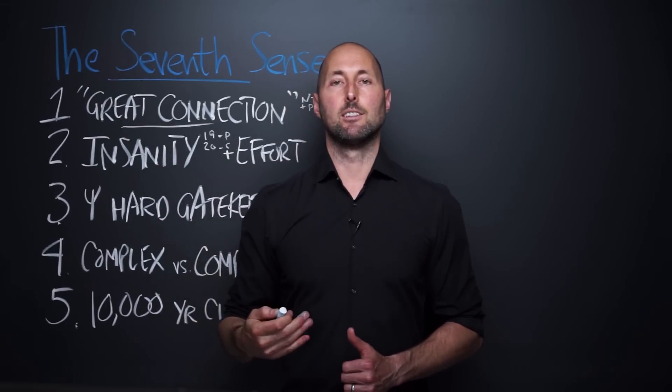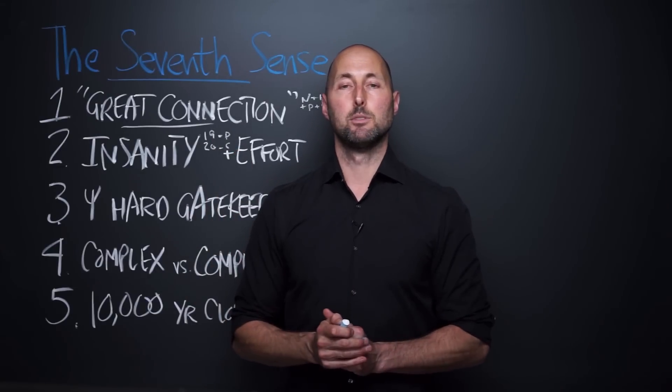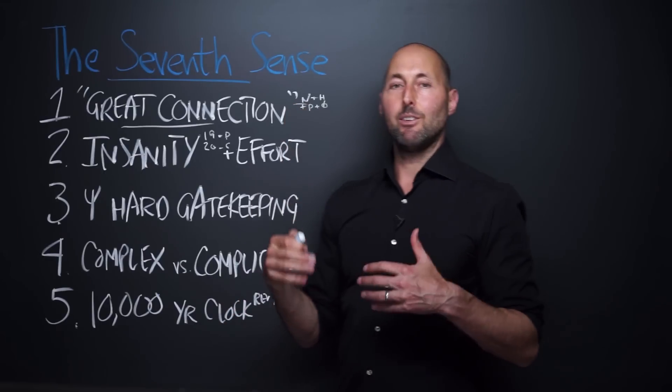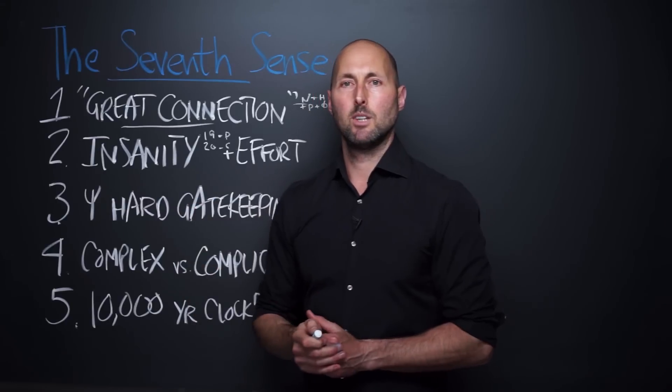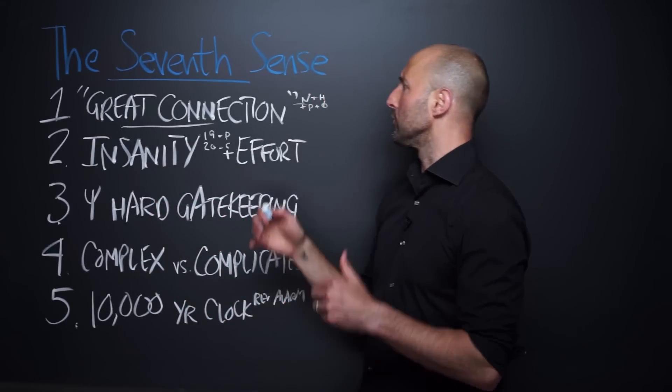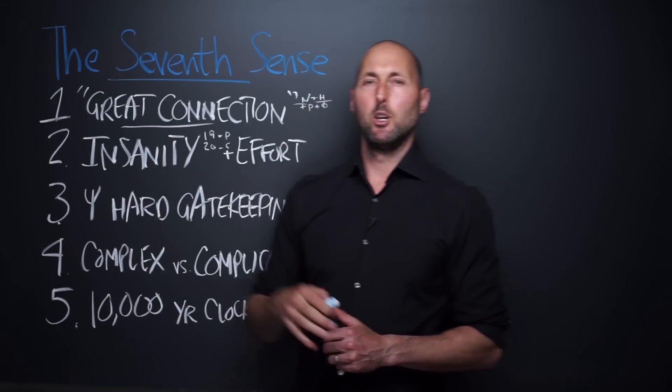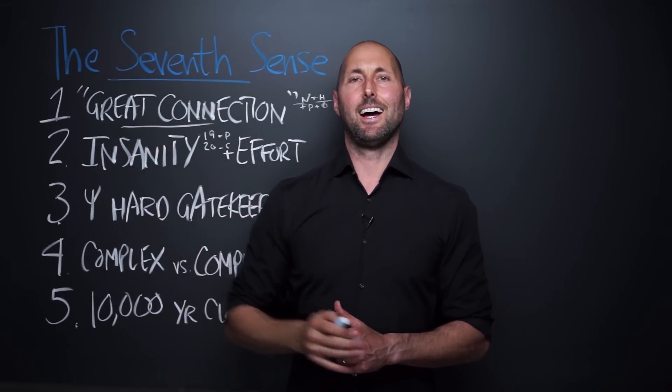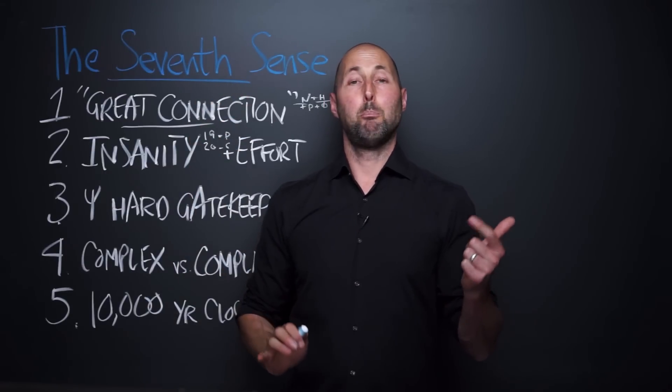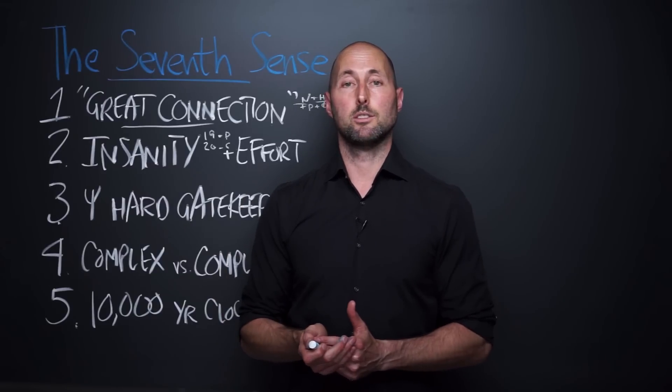Let's start with The Great Connection. The point of the book is that we're living in revolutionary times. He says that this is as revolutionary as the agrarian revolution, the industrial revolution, the enlightenment. He says when we fast forward and our great-great-grandchildren are looking back on today, they're going to have a name for it.